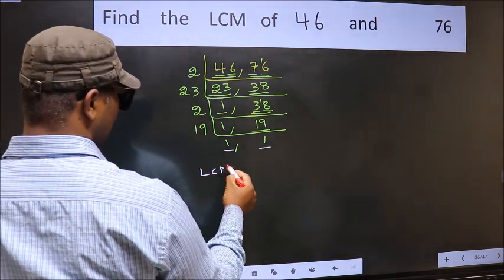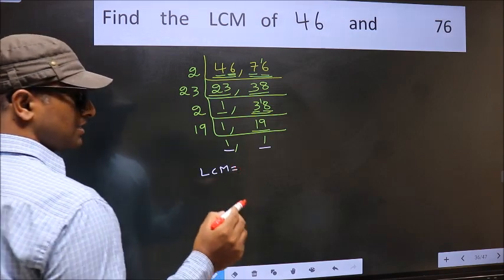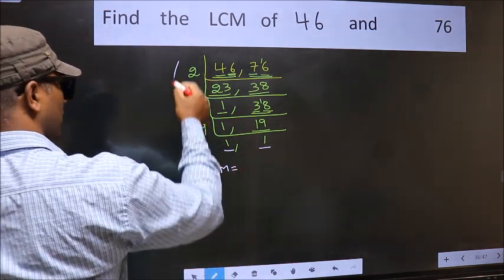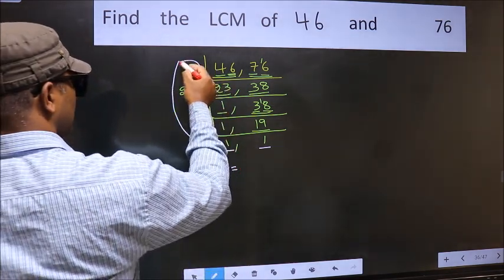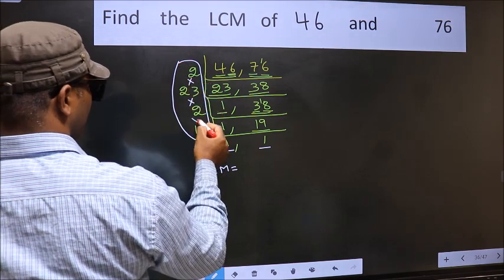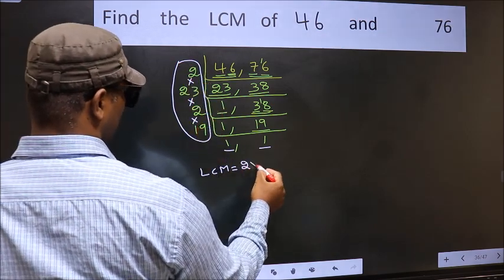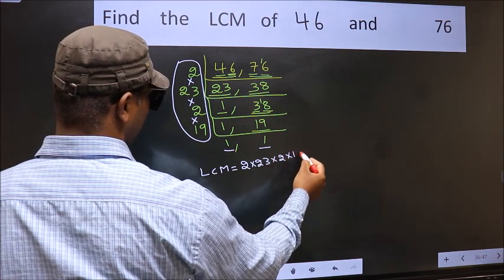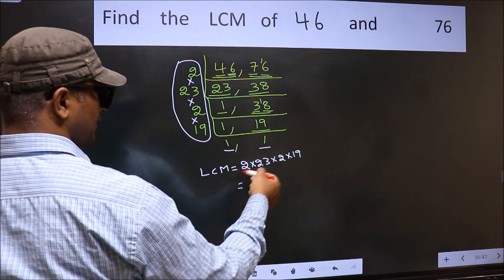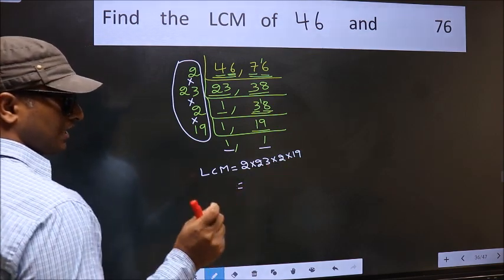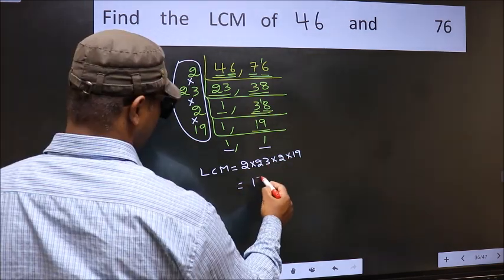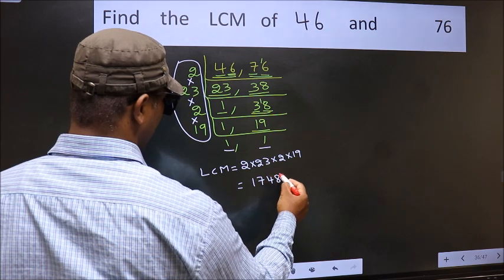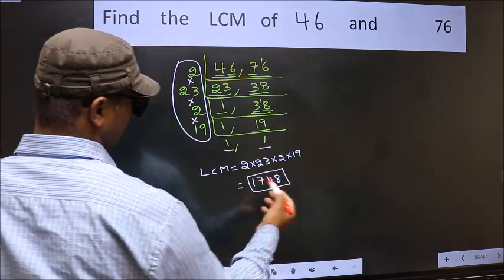So our LCM is, LCM is the product of these numbers. That is 2 into 23 into 2 into 19. When we multiply these numbers, we get 1748 is our LCM.